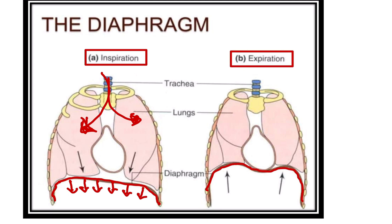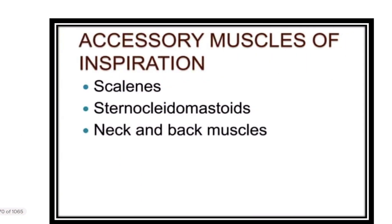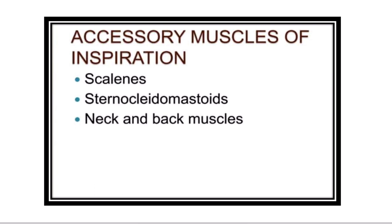On the other hand, when inspiration is completed, expiration starts. During expiration, the diaphragm moves upward, the pressure within the lungs increases, and finally air goes out. So the main muscle for both inspiration and expiration is the diaphragm.